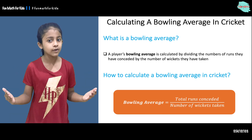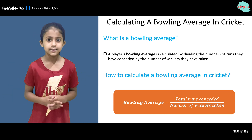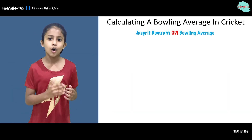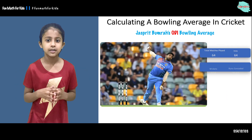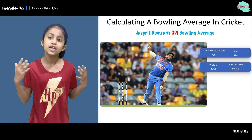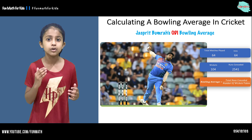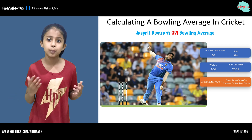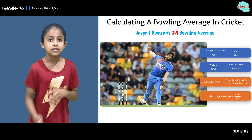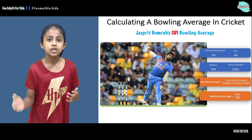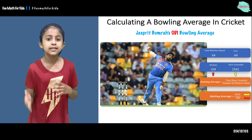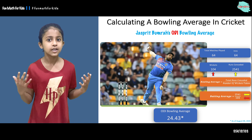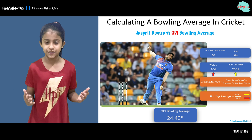The bowling average formula is total runs conceded over the number of wickets taken. Now let's calculate Jake Boomerang's ODI bowling average. Using this bowling record and the formula, we get 2,541 over 104, which gives an ODI bowling average of 24.43.